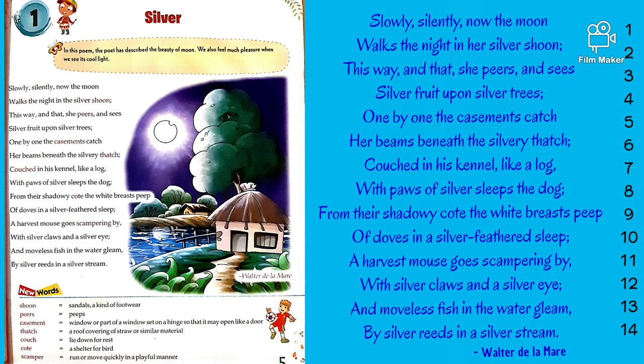In the next two lines: couched in his kennel like a log, with paws of silver, sleeps the dog. The speaker moves on to something with more life — a dog sleeping like a log in his kennel or outdoor shelter. Without his knowledge, the moon touches him and turns his paws silver. This is a magical moment.